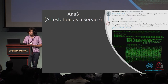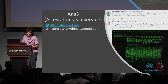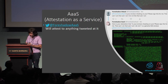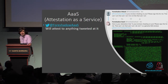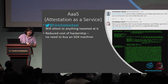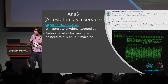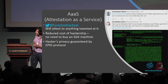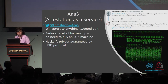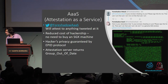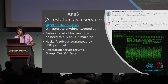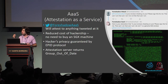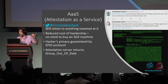To help facilitate that erosion of trust, we'll give you S — Attestation as a Service. It's a Twitter bot that will attest to anything you tweet at it. It reduces the cost of the attack, and you no longer need to own an SGX machine — we did it for you, extracted the key, and made it available online as a public service. Your identity is protected by the privacy of the EPID protocol because nobody can say whose key signed what. Currently, it returns 'group out of date' because Intel issued a patch against the original Foreshadow, which means we need to update our machines, which we haven't done yet. If you take our attestation to Intel's server, you get a group out of date response.